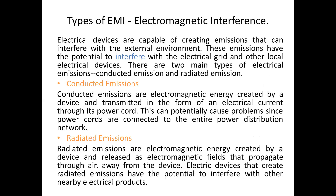Now we are going to see the types of electromagnetic interference. Electrical devices are capable of creating emissions that can interfere with the external environment. These emissions have the potential to interfere with the electrical grid and other local electrical devices. There are two main types of emissions: conducted and radiated emissions.